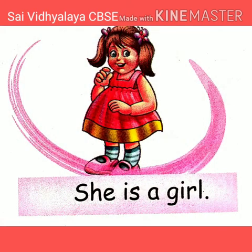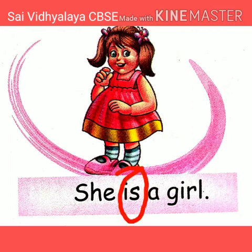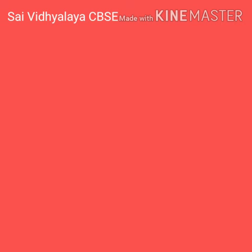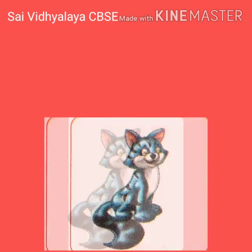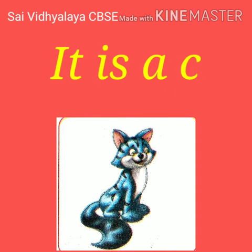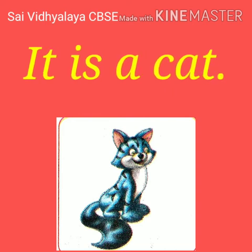Who is she? She is a girl — only one girl, so we use is. Is is used with he, she, it. She is a girl. What is this? A cat — only one cat, so we use it: it is a cat. So is is used with he, she, it.